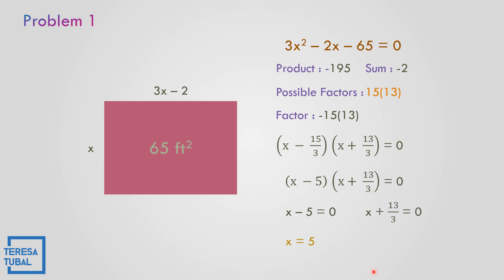The second factor: x plus 13 over 3 is equal to 0. Solve for x: x is equal to negative 13 over 3. Since the answer is negative, this is rejected — there is no width or length that is negative. So the value of x is equal to 5. Let us replace: the width is equal to 5 feet. How about the length? 3 times 5 is 15 minus 2, the answer is equal to 13 feet. So the width is 5 feet and the length is 13 feet.